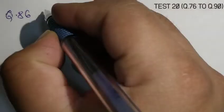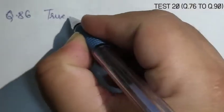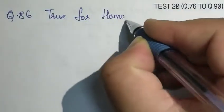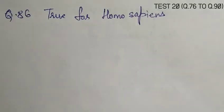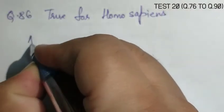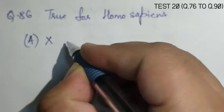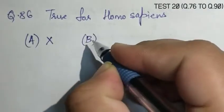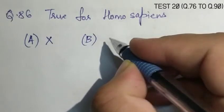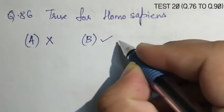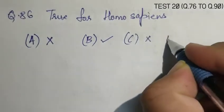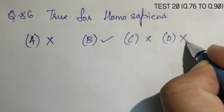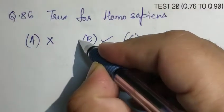Question number 86, Which of the following is true for Homo sapiens? A. Protruded mouth, that is false. B. Cranial capacity 1450 cc, that is correct. C. Omnivorous, that is wrong. D. Developed chin, that is also wrong. So, the correct answer is B.